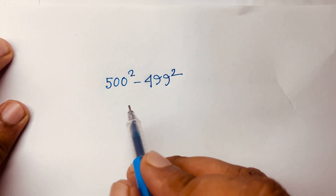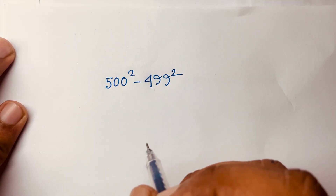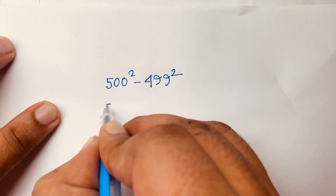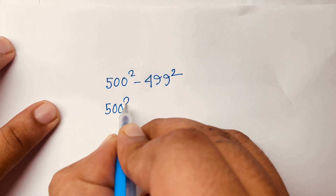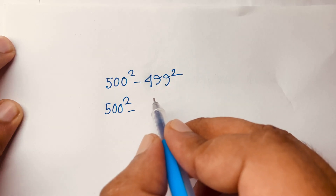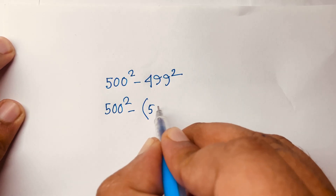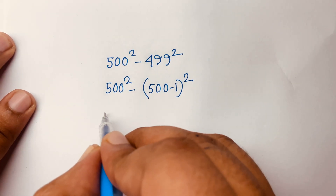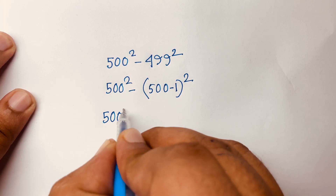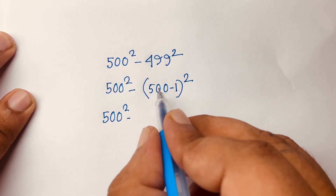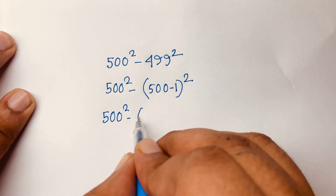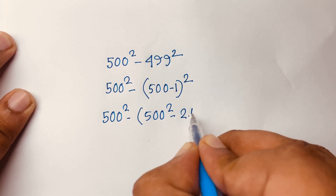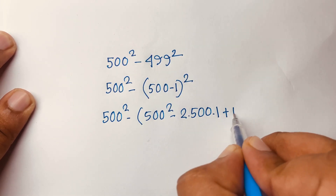How to solve the math question 500 square minus 499 square. I will solve this question using three methods. For the first method, 499 can be written as 500 minus 1, so 499 square becomes (500 minus 1) whole square. We know that (a minus b) whole square equals a square minus 2ab plus b square.